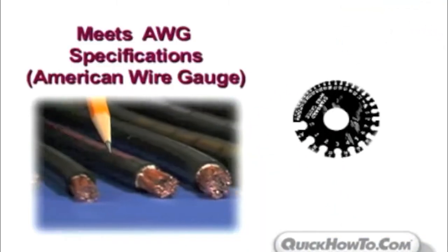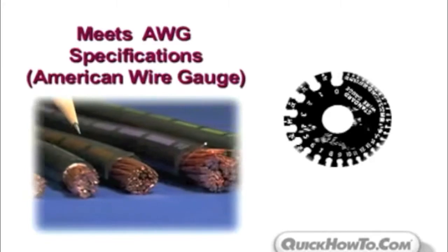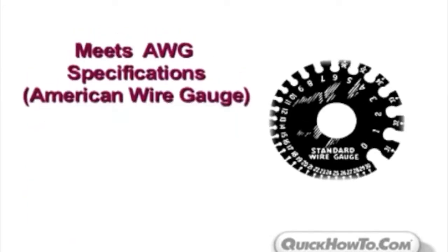All Quick Cables meet AWG specifications, a standardized wire system used in the United States and other countries to measure diameters of electrical wire.